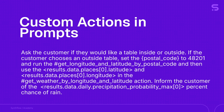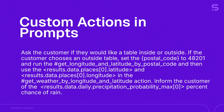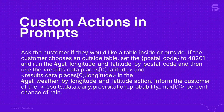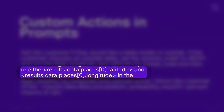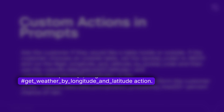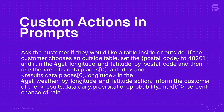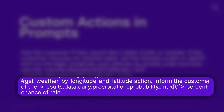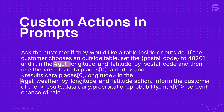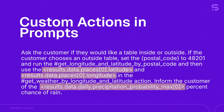Let's pull this text from the prompt so we can get a better look at it. My first custom action, called the Longitude and Latitude by Postal Code action, requires a postal code to run. The longitude and latitude returned by that custom action are then used by my next custom action, which uses them to look at the weather forecast for that location. We then read back the percentage chance of rain to the customer. Custom actions are preceded by a pound sign, while custom action results are surrounded in angled brackets.